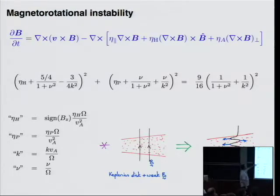By Hall, I've rescaled things here. So I'm using ω, the disc frequency, as the unit of frequency. K is the usual kVA over omega and the diffusivities have been scaled appropriately. And I buried the sign of BZ in here because you have this sense of magnetic field dependence in the Hall term just to keep things simple.